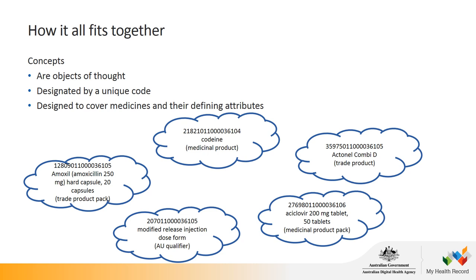So how does it all fit together? Let's start with concepts, which are the centre of the terminology. A concept is an object of thought, designated by a unique concept identifier, and covers medicines and their defining attributes. For example, codeine is a medicinal product with a unique ID and human-readable description. Moving clockwise, we have Actinil Combi-D, which is a trade product, and Aciclovir 200 milligram tablet 50 tablets, which describes a medicinal product pack.